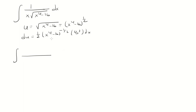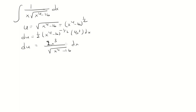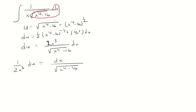Cleaning this up: 4 times one-half is 2, so we have 2x cubed over the square root of x to the fourth minus 16, dx. Moving 2x cubed to the other side gives us dx over the square root of x to the fourth minus 16. So that expression gets replaced with 1 over 2x cubed du, and we can bring the one-half outside.